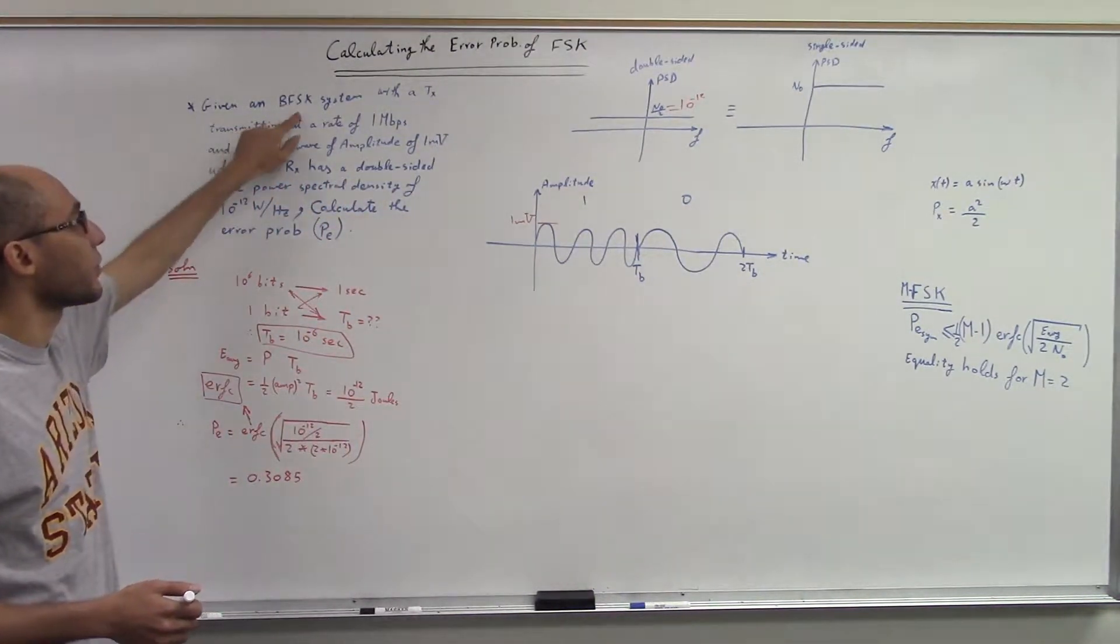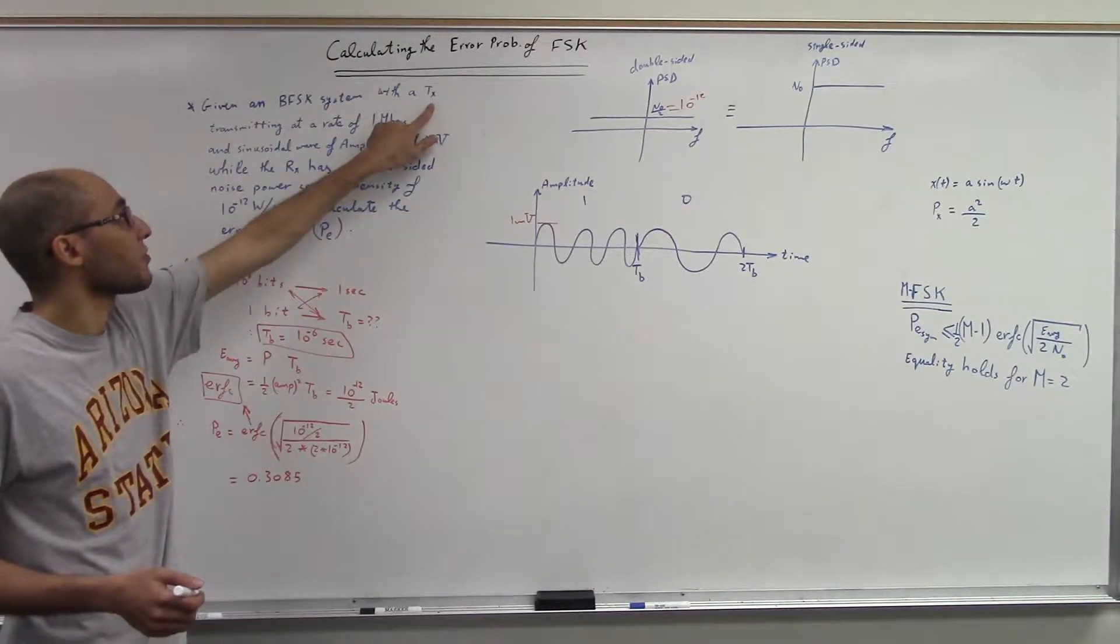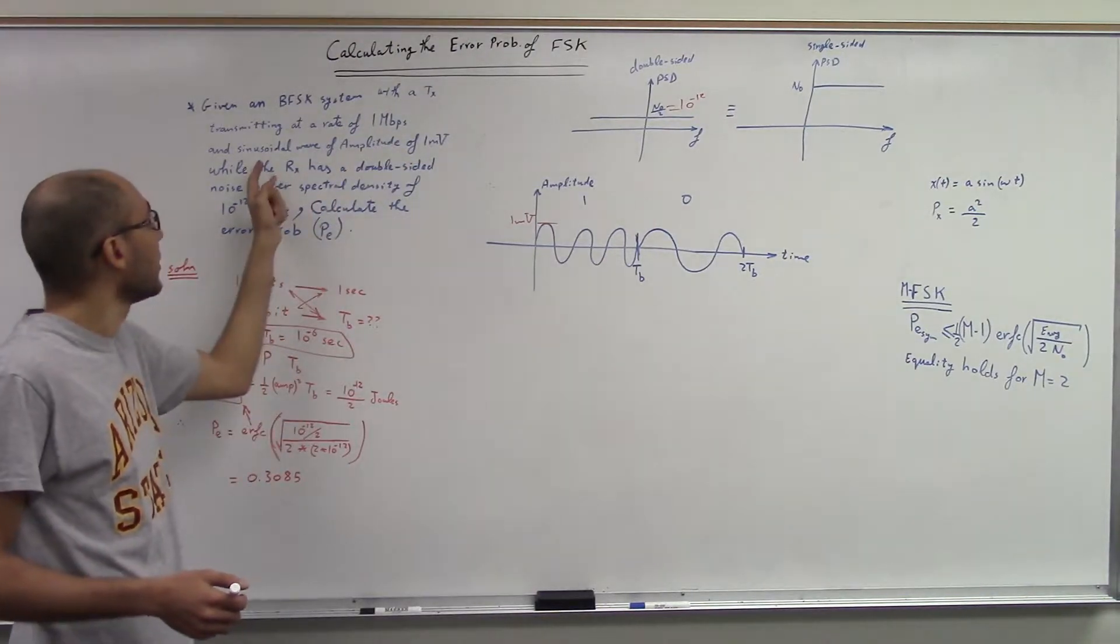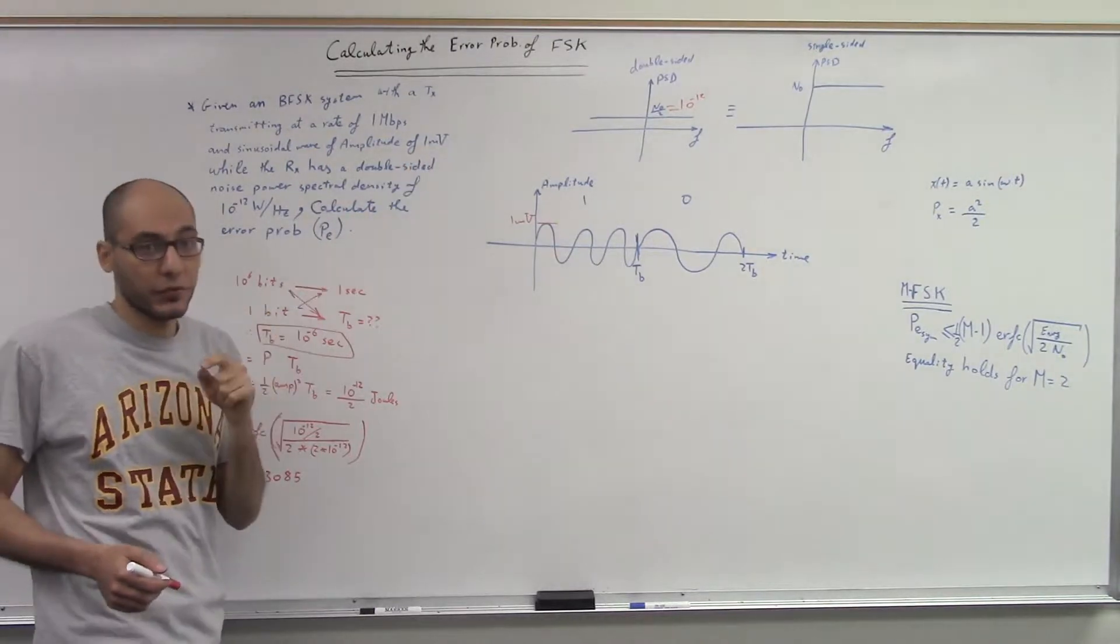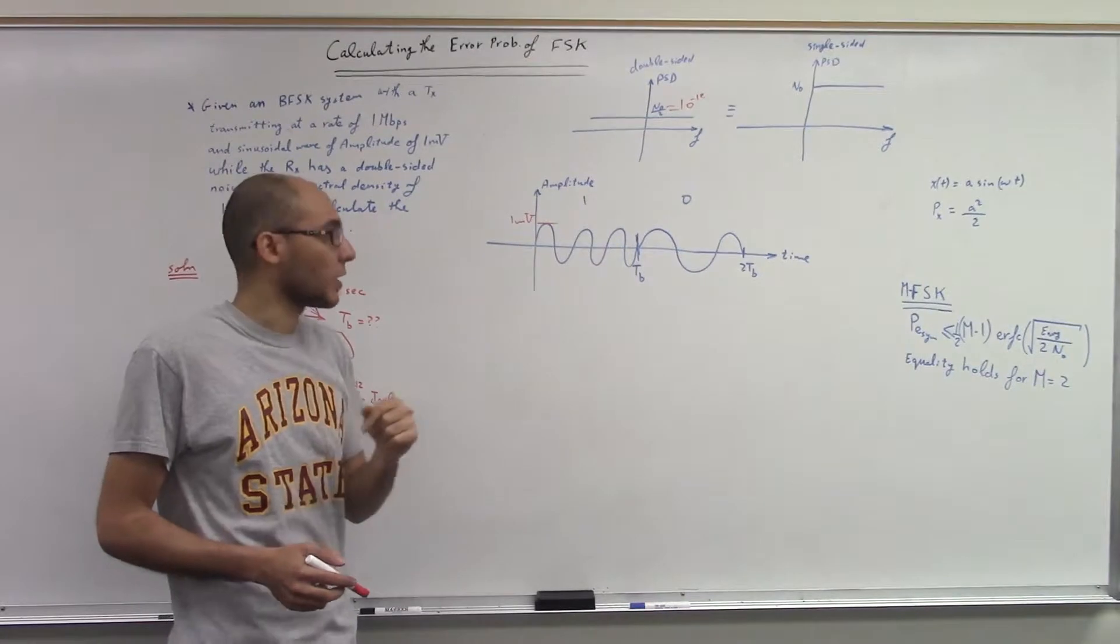So the problem is asking for a binary frequency shift keying to calculate the probability of error, given that the transmitter is transmitting at a bitrate of 1 megabits per second, and the sinusoidal wave of this transmission happens with 1 millivolt. So at the receiver, I'm receiving 1 millivolt for the sinusoidal wave.